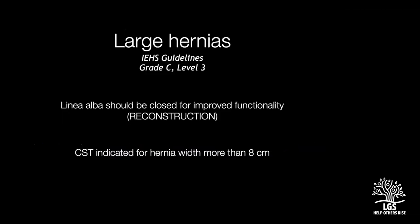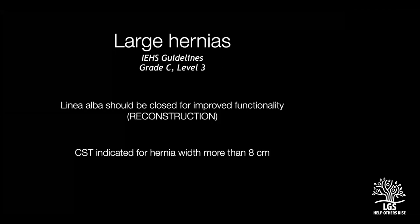The IEHS guidelines, based on level three evidence, have a grade C recommendation that in large midline hernias, the linea alba should be closed for improved functionality and to obviate the disadvantages of bridging repair. So reconstruction is now preferable over bridging repair. To do reconstruction — to bring these two rectus myofascial complexes together without tension — a technique called component separation technique is used, whereby one of the lateral muscles is cut. This is generally indicated when the defect width is more than or equal to eight centimeters, though this number is approximate and varies by patient.